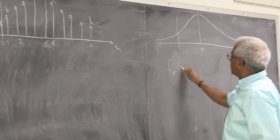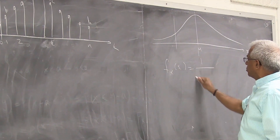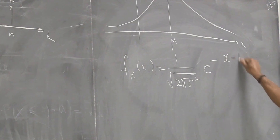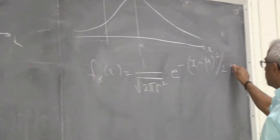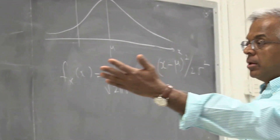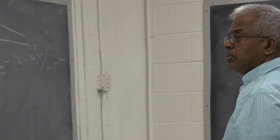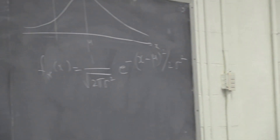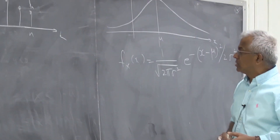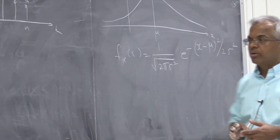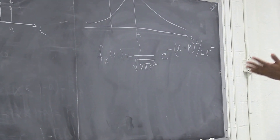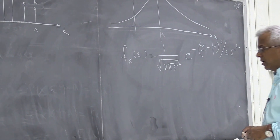The Gaussian density function can be written as 1 over square root of 2π σ² times e raised to minus (x minus μ)² over 2σ². What I want to show is that the binomial under some conditions will begin to look like a Gaussian or normal density function.